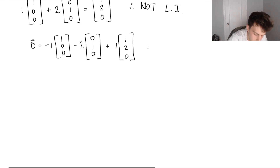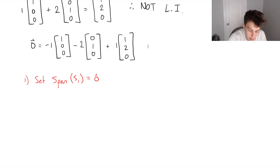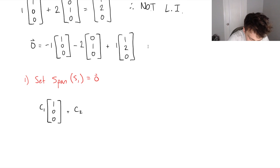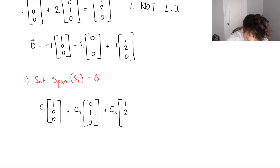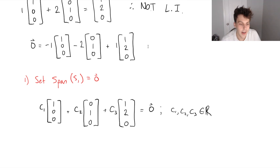Now let's conduct our test, just like you've probably been taught in class. The first thing you're often told to do is to set the span of the vectors of S1 equal to the zero vector. If we were going to do that, we would be left with some constant C1 times the first vector, plus some constant C2 times the second vector, plus some constant C3 times the third vector, all equal to the zero vector. Let's define C1, C2, and C3 as some constants.